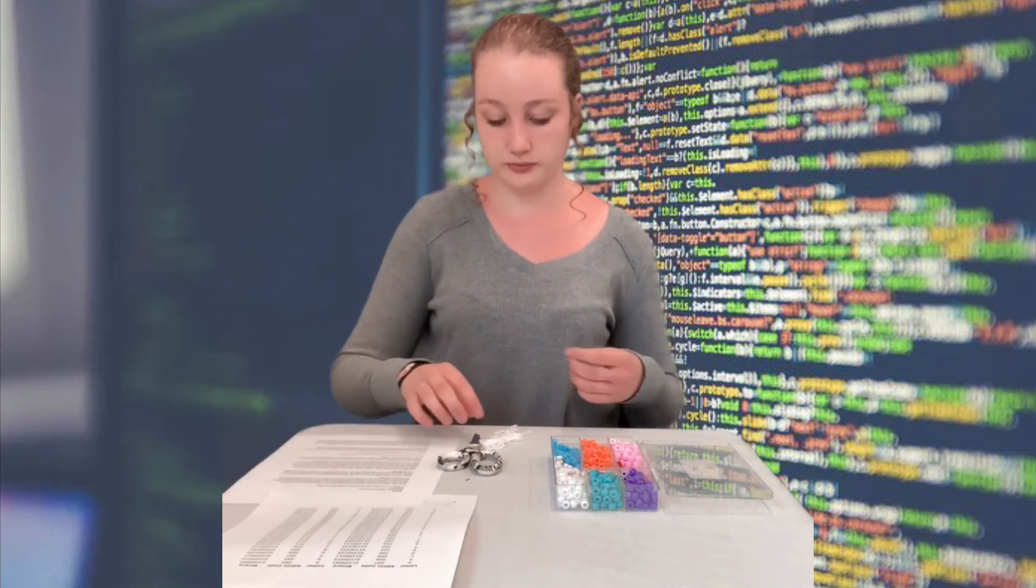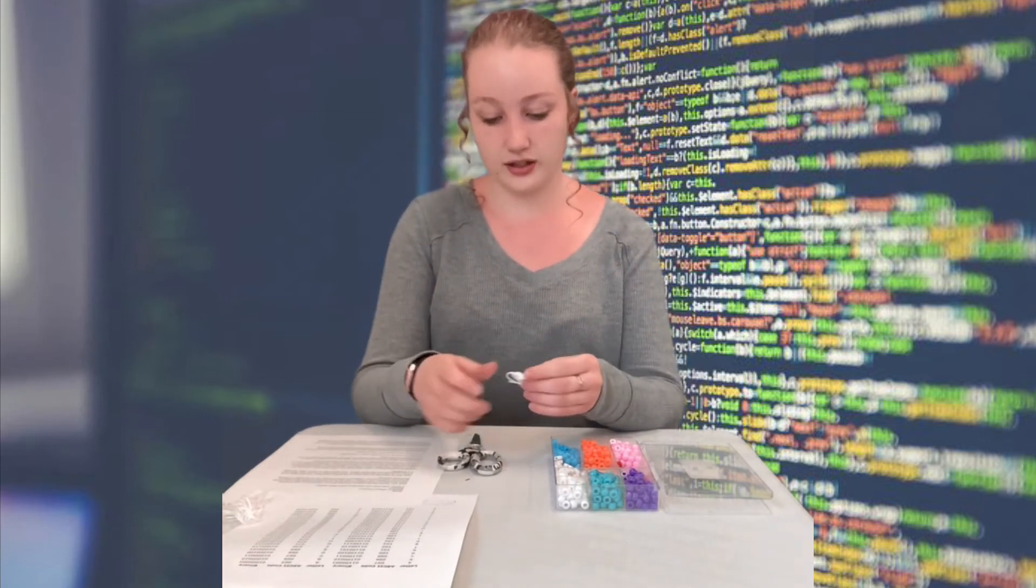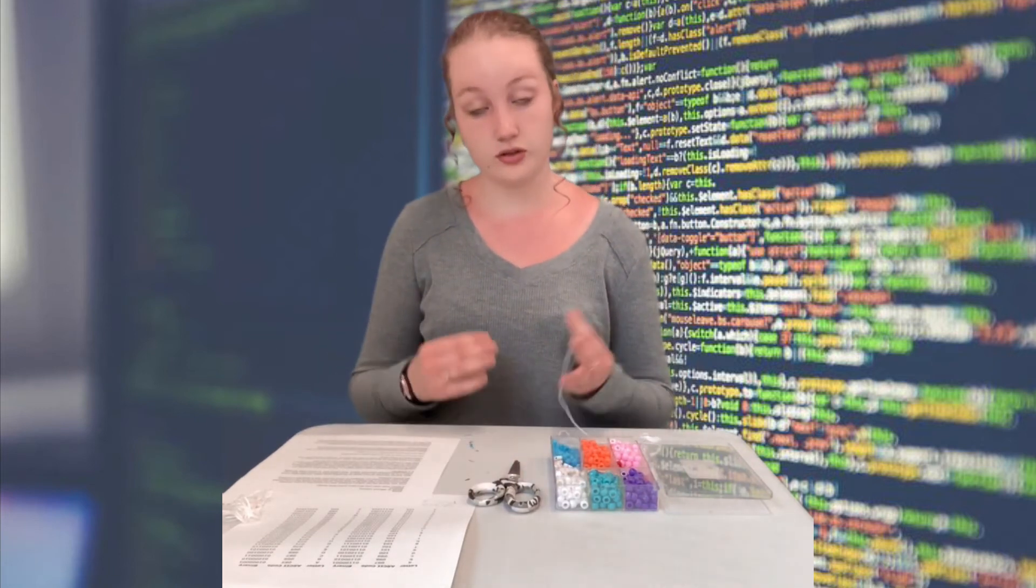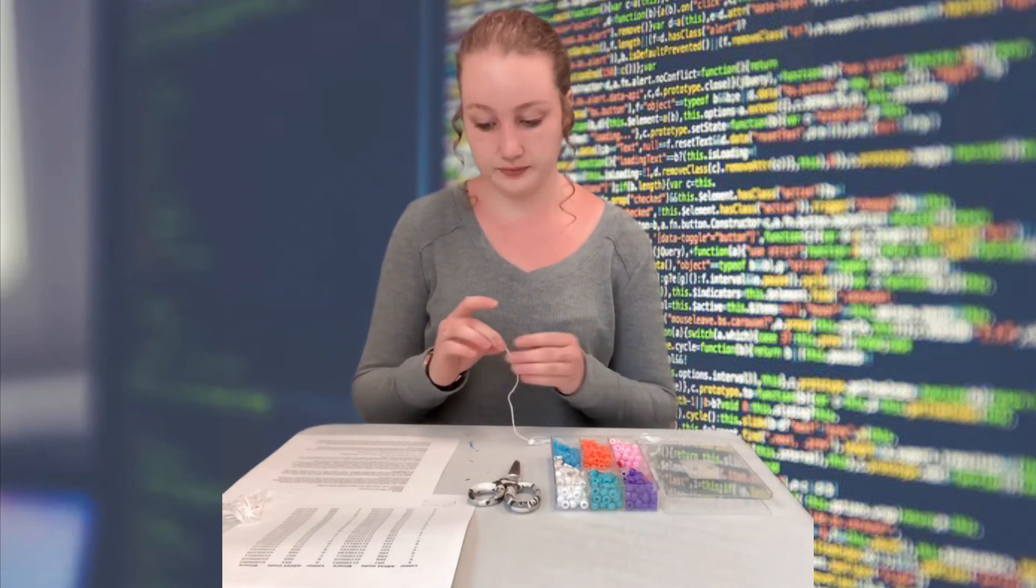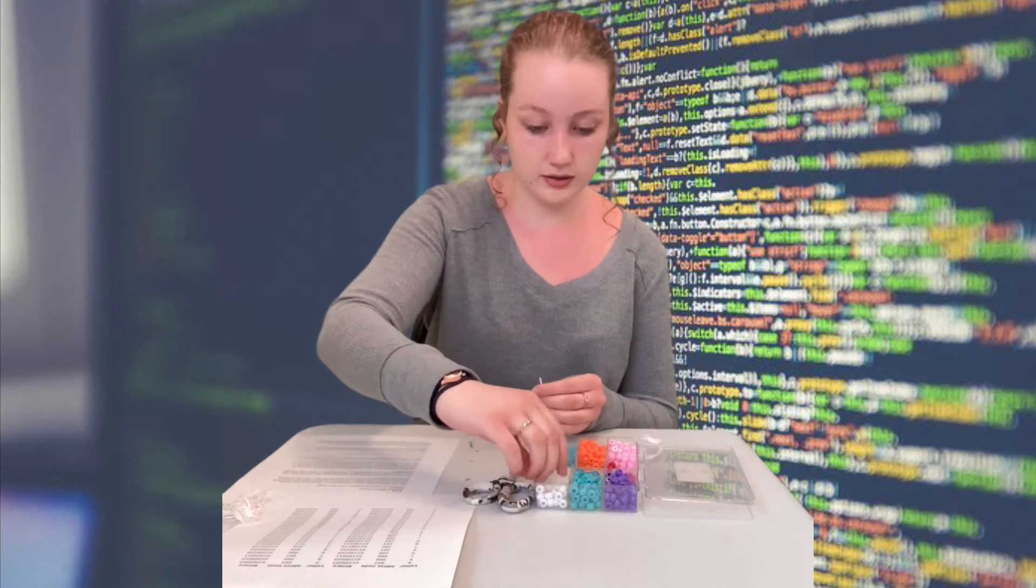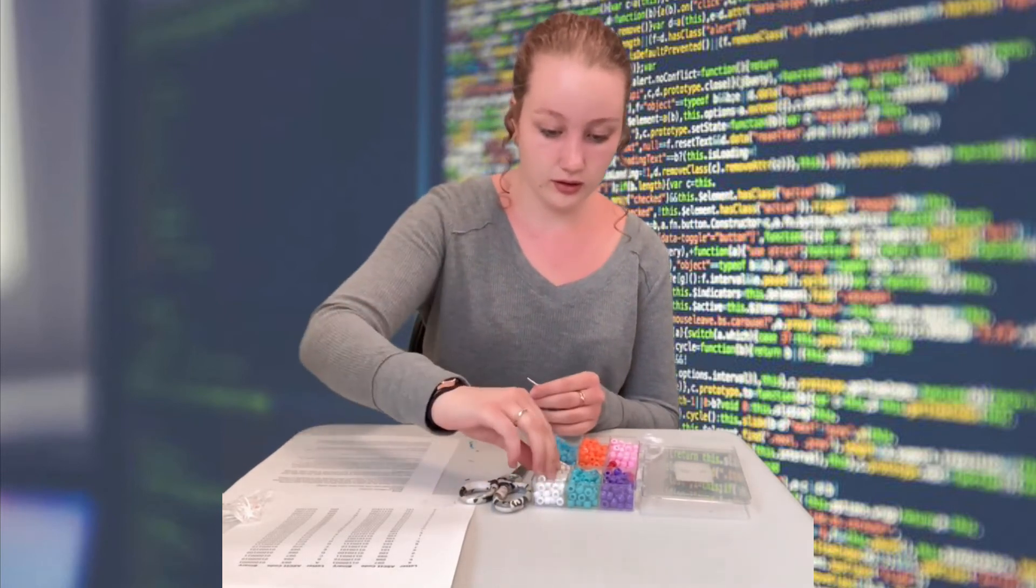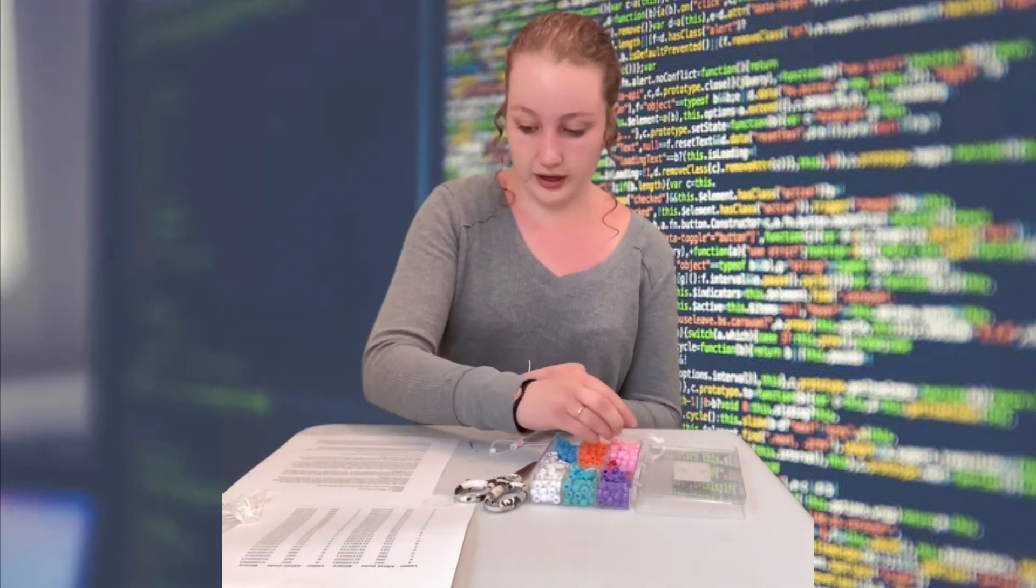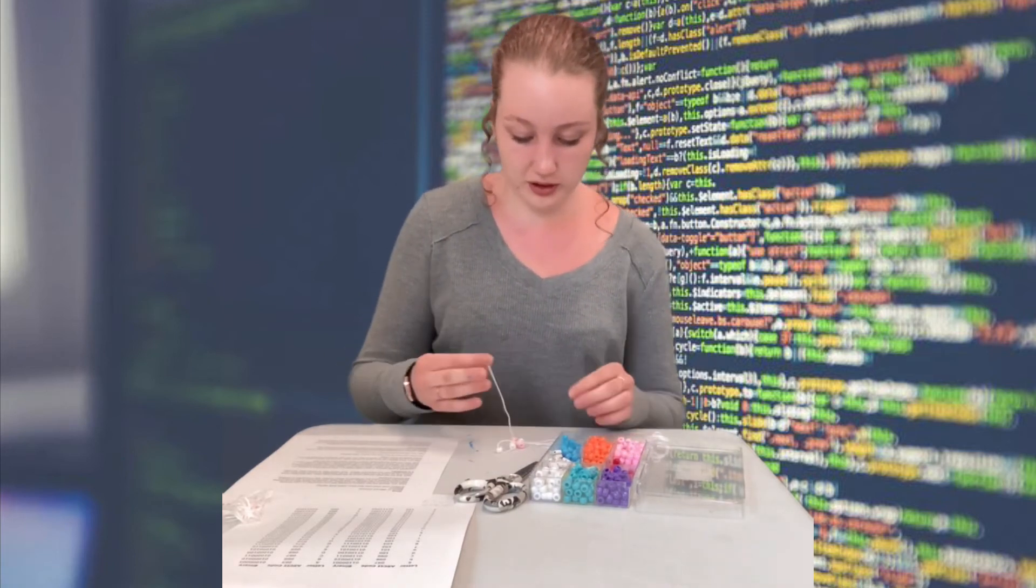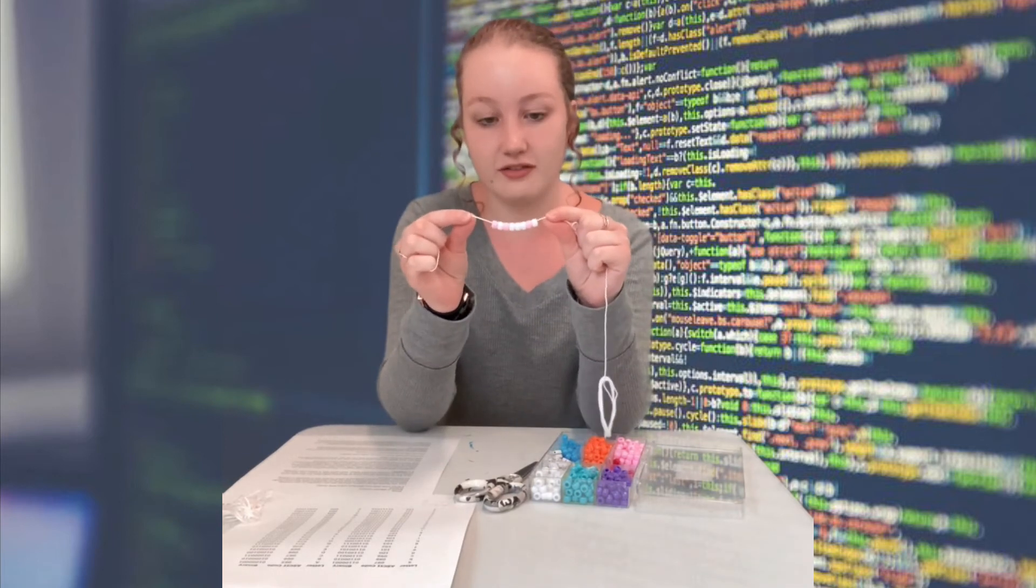And so in binary code if I take a look E is 0 1 0 0 0 1 0 1. Now we're going to take some string. I suggest leaving it as is not cutting it too prematurely just because we don't quite know how much we're going to need yet. So we're going to take some string and we're going to code our name. So the first letter is or the first number sorry is a 0 so that means a white bead. Then we have a 1 which means pink. That's followed by three zeros or three white beads. And three which is followed by a 1 so another pink bead. A 0 so a white bead. And then a final pink bead. And there is E the first letter of my name.